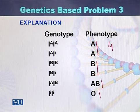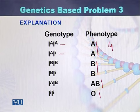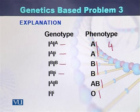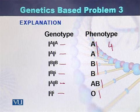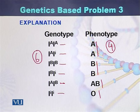There are four phenotypes and six genotypes. For blood group A, there are two genotypes — it can be homozygous or heterozygous. For blood group B, it can also be homozygous or heterozygous. In the case of blood group AB and O, both have a single genotype each. So there are four phenotypes and six different genotypes.